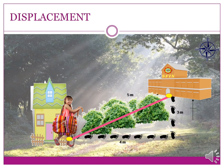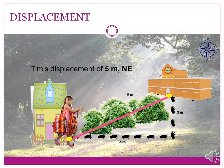Let us take another look at our example. Teen traveled 4 meters east and 3 meters north. We already know that the total distance traveled by Tim is 7 meters. Let us now find out the displacement. To find this, we just need to measure the distance between the initial position and the final position of the object. Thus, the displacement of Tim is 5 meters northeast. This means that Tim is 5 meters away from the starting position to its final position. If we draw a straight line from the initial position to the final position, the direction is northeast.